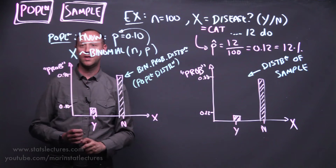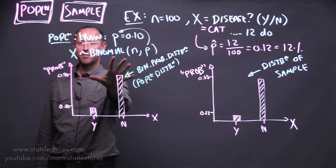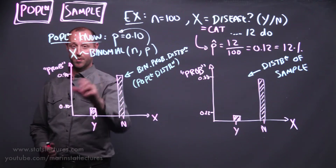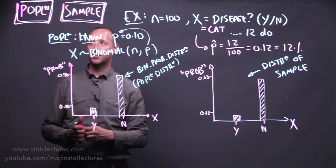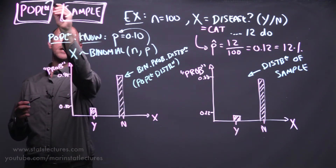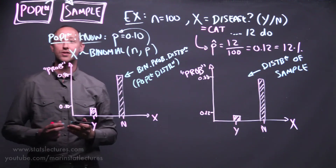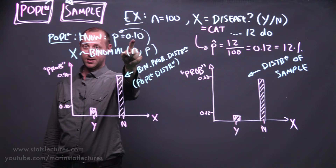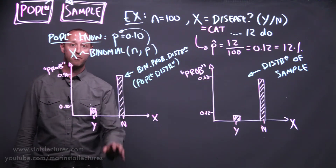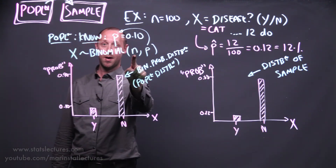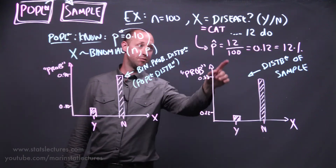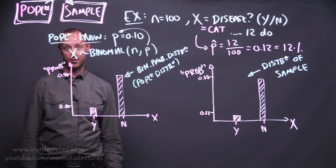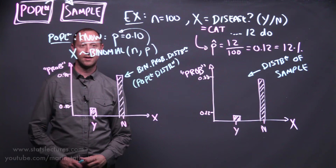In Module 2 we'll learn about the binomial distribution, supposing that we knew the truth of the population. This can help us understand, when we collect some data, how likely are certain things to show up in a sample. If we know that 10% of the population has a particular disease and we randomly select 100 people from that population, what's the chance of observing 12% of people in our sample having the disease?